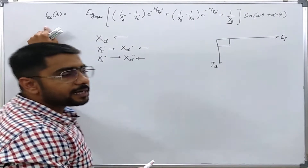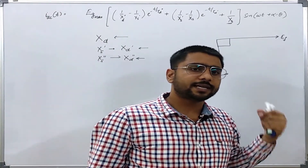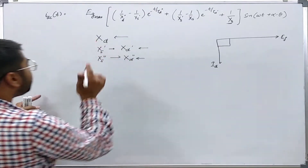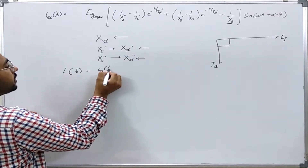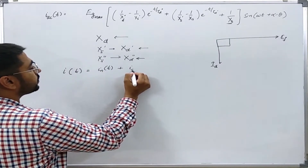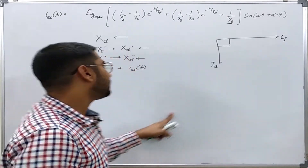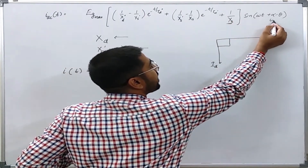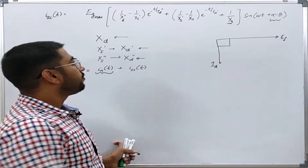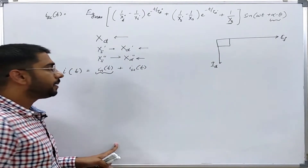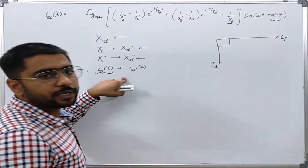This covers the symmetrical part of the short-circuit current. We have also seen in one of the previous lectures that there is also a DC part — that is, the current is actually composed of the natural response and the steady-state response. In our previous lecture, we assumed a case where alpha minus theta was giving a value such that the DC part was zero initially, so we were dealing with only the symmetrical part. Now we want to generalize further and include the DC decaying part in the expression.